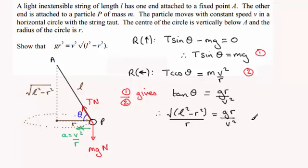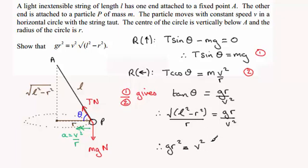It's just a question of rearranging this. Multiplying both sides by R and V², we get gR² = V² multiplied by the square root of L² minus R². And that's what we had to show — the conical pendulum result.